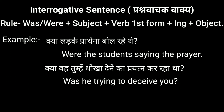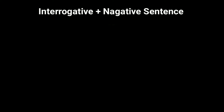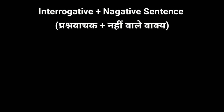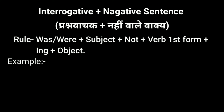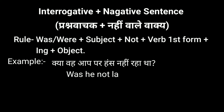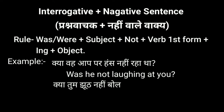Finally we come to interrogative plus negative sentences — प्रश्नवाचक plus नहीं वाले वाक्य. To make these we use: Was/Were + Subject + not + verb first form + ing + object. For example, 'क्या वह आप पर हंस नहीं रहा था?' — 'Was he not laughing at you?' In this, 'was' is the helping verb, 'he' is the subject, 'not' is used for negation, and 'laughing' is the verb first form plus ing.